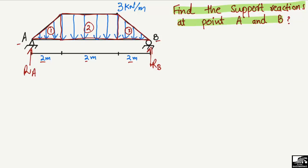We find the area of each part, since each area represents the equivalent load acting on the beam. The area of the first triangle is one-half base times height: half of 2 meters times 3 kN/m, giving 3 kilonewtons. This 3 kN load acts at the centroid of the first triangle.